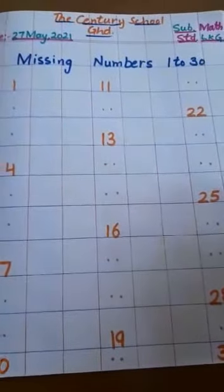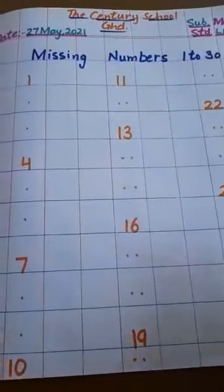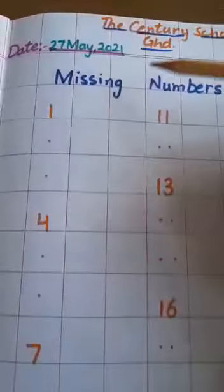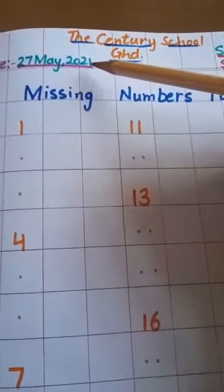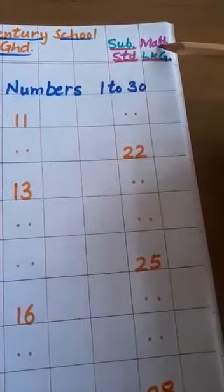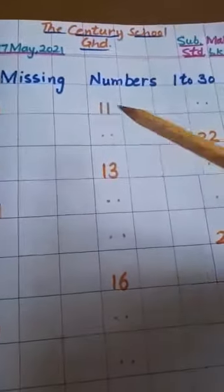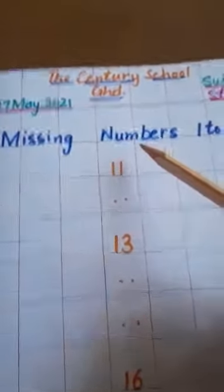Very good morning, my dear students. How are you? Dear students, today is Thursday, date is 27 May 2021, and this is your maths class. Today our topic is missing numbers.